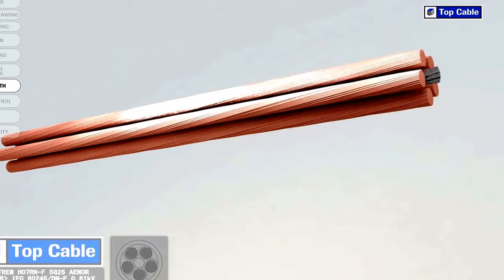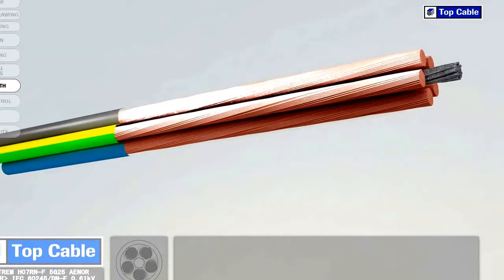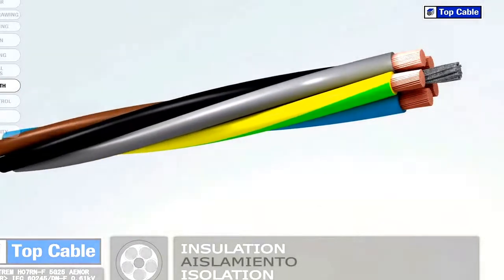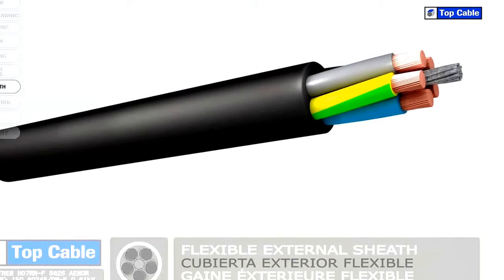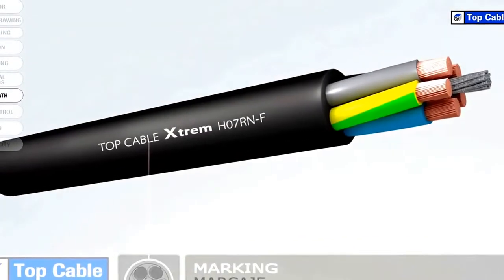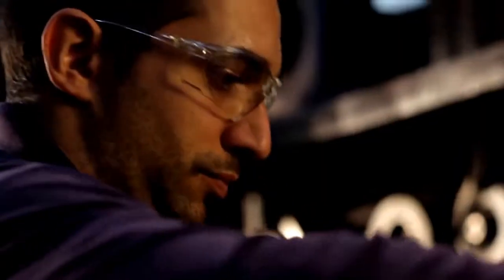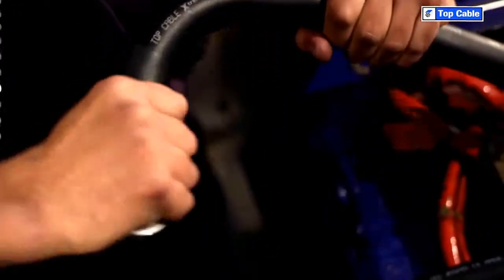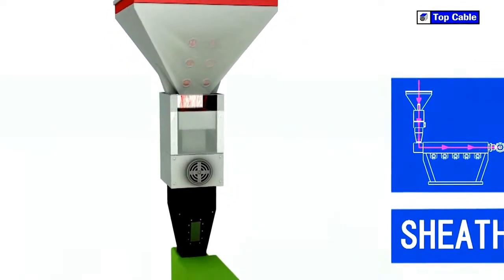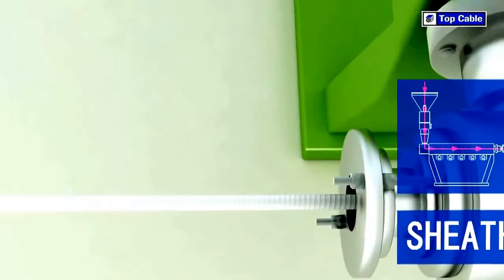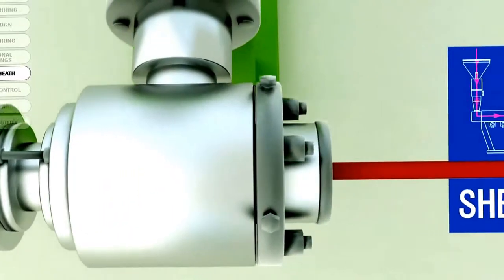Cables usually have an outer polymer covering for protection, called the outer sheath. The sheath protects the conductors and their insulation from external elements which may change their electrical properties, such as moisture. It also protects them from mechanical aggression which may occur during installation. As with the insulation, the outer sheath can be made from a thermoplastic or a thermosetting plastic, applied via a process of extrusion at high temperature. The sheath material varies depending on the required protection level, final flexibility, and work environment.